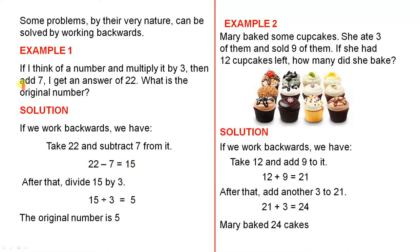Now remember, the opposite operation of adding is subtraction. That's the clue there. So we have to subtract 7 to end up with 15. Now originally, we multiplied the number by 3. So the opposite operation of multiplication is division. So after that, divide 15 by 3. Then we divide 15 by 3 to give us 5. So the original number is 5.